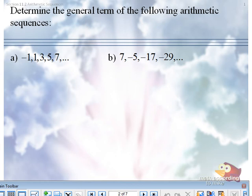Determine the general term of the following arithmetic sequences. In order to find the general term of an arithmetic sequence, there are two things you need. You need to know the first term, a₁, and you need to know the common difference, d.